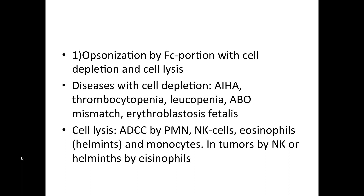In autoimmune hemolytic anemia, you will have antibodies that bind to your red blood cells. As they pass through the Billroth cords of the spleen, they will get stuck there and the splenic macrophages will engulf and digest them. As this is a systemic reaction, there will be a requirement for an increased amount of splenic macrophages, so the spleen will increase in size.